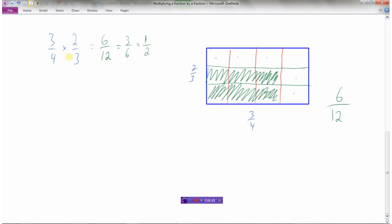So three-quarters times two-thirds is one-half. And that's how we can show multiplying fractions using a model and determining what the area would be.